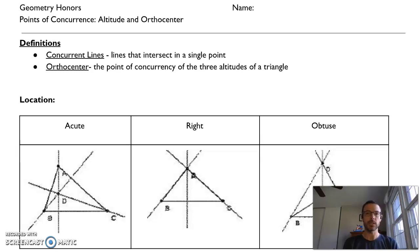So far we have covered the centroid, which is formed as the point of concurrency for your medians, the circumcenter, which is the point of concurrency of the perpendicular bisectors, and the incenter, which is the point of concurrency of your angle bisectors. The orthocenter is the point of concurrency for your altitudes.